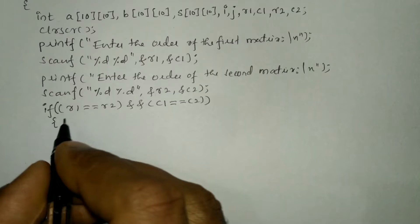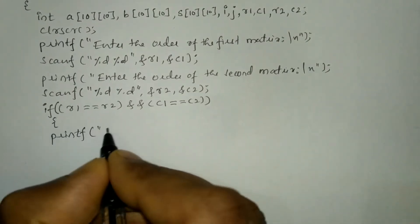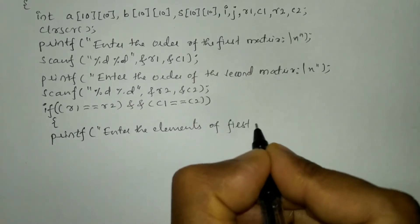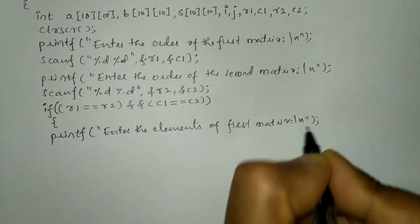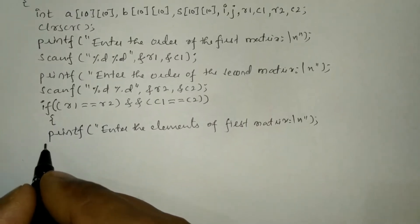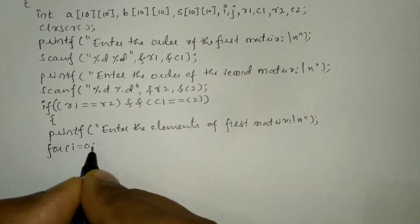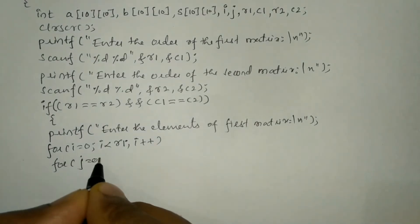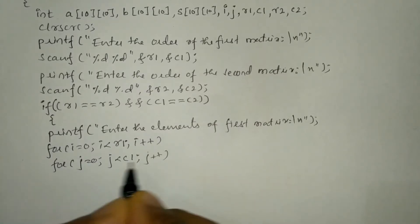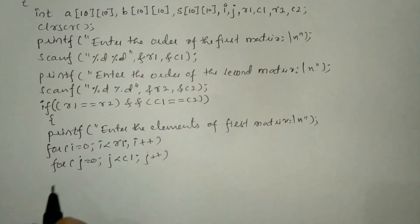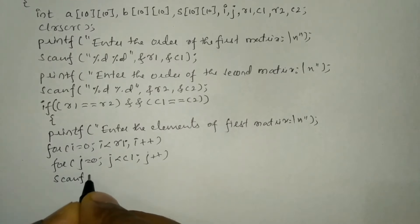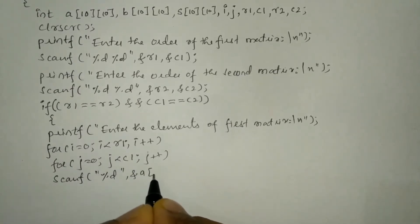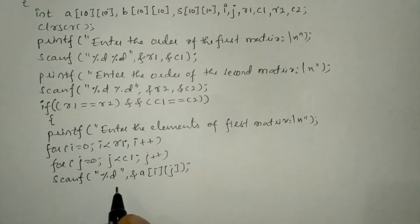If the condition is true, we'll ask the user to enter the elements of the first matrix using a printf statement. We are going to receive the elements one by one using nested for loops: for i equals zero, i less than R1, i plus plus; and inner loop for j equals zero, j less than C1, j plus plus. We receive each element using scanf with %d format specifier and ampersand A[i][j] and put semicolon.